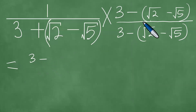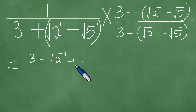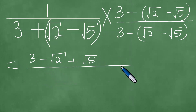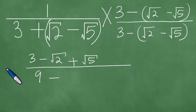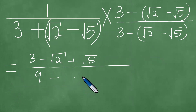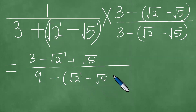So you have 3 minus. If you distribute, then you have minus the square root of 2 plus the square root of 5. So you divide by 3, which is 9 minus. So you have 9 minus there. What this yields is the square root of 2 minus the square root of 5, squared, like so.